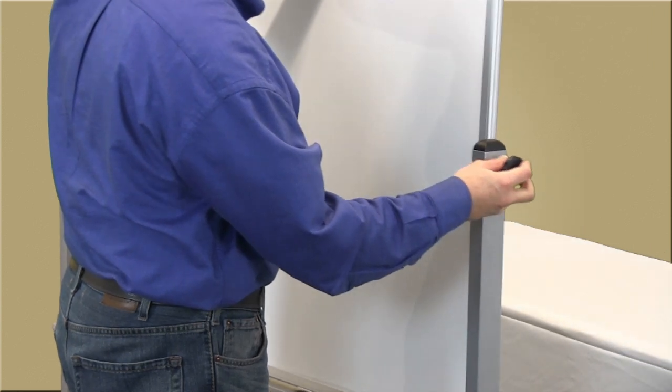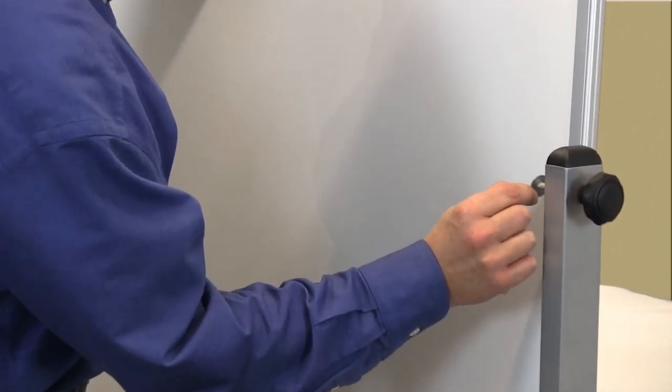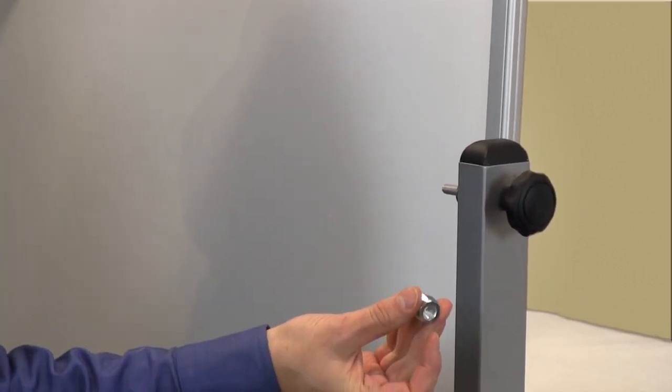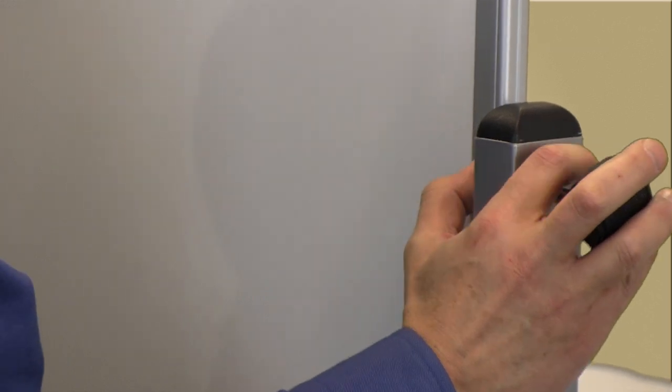Slide the knob through the hole on the top of the vertical support. Line up the slip nut and small washer with the hole of the threaded insert that's been pre-attached to the side of the whiteboard.